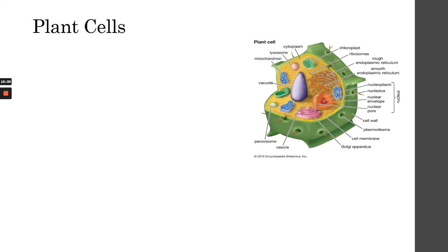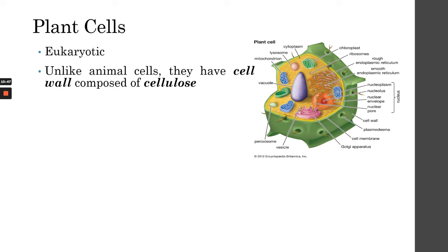Now let's talk about plant cells. Here is a picture of a plant cell. Plant cells are very similar to the cellular structure discussed in lesson 2, but they have some distinguishing features. One key difference is that plant cells have a cell wall, unlike animal and human cells which do not. The cell wall of plant cells is made up of cellulose.